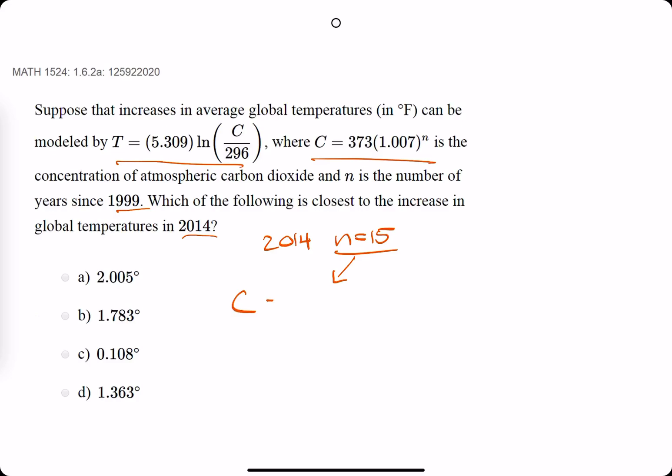We plug n into the function C, so 373 times 1.007 to the n power, which is 15.